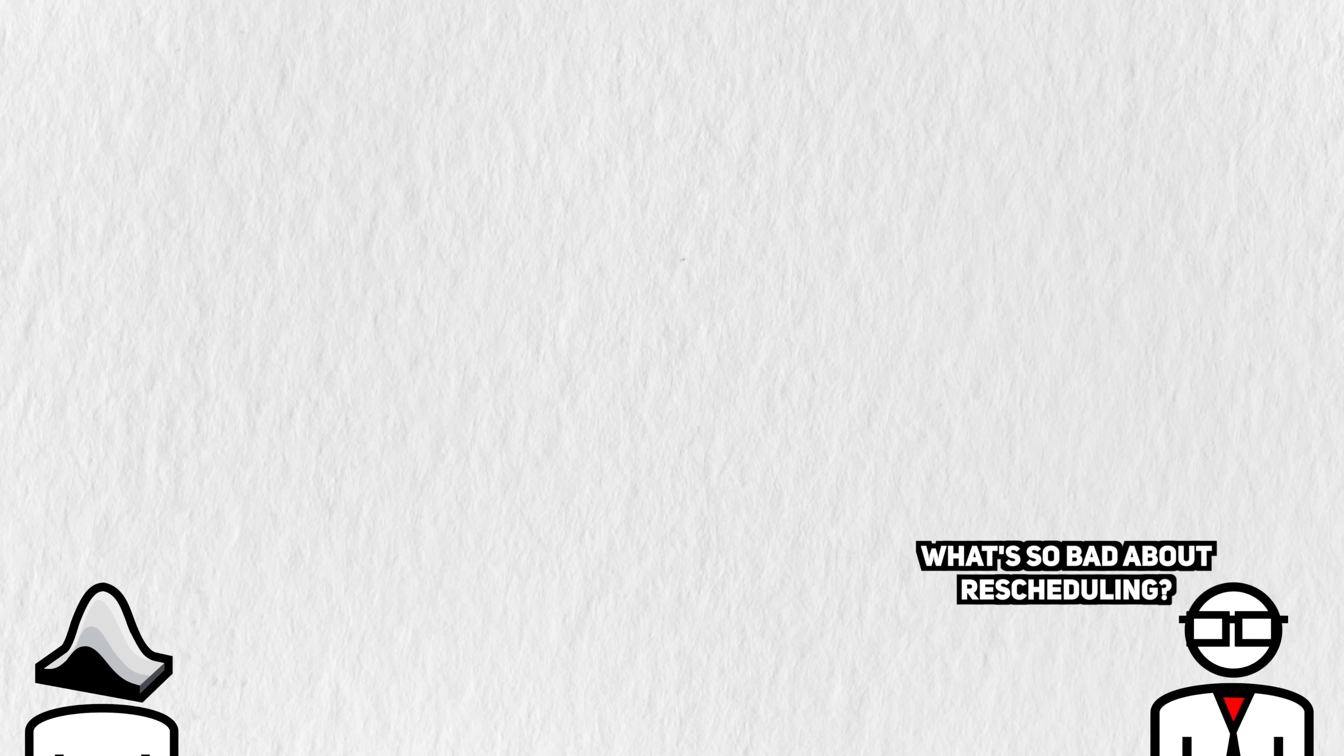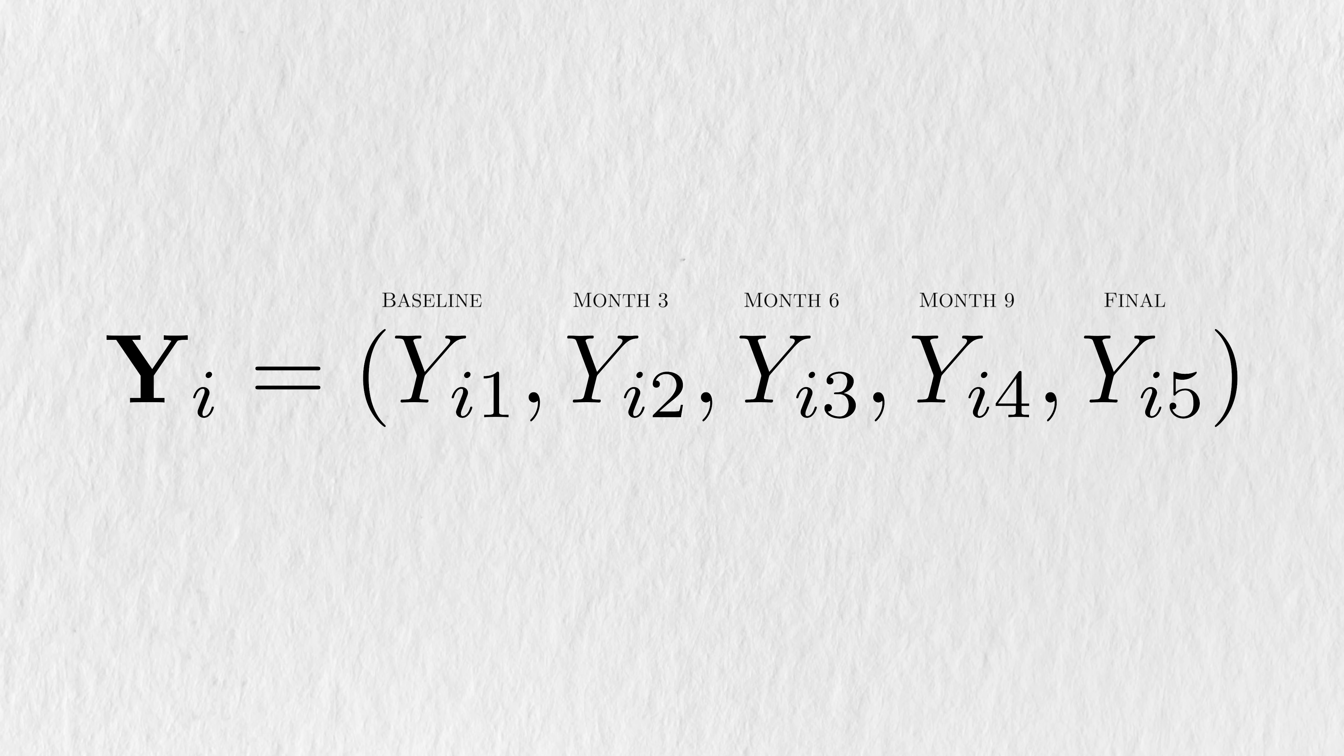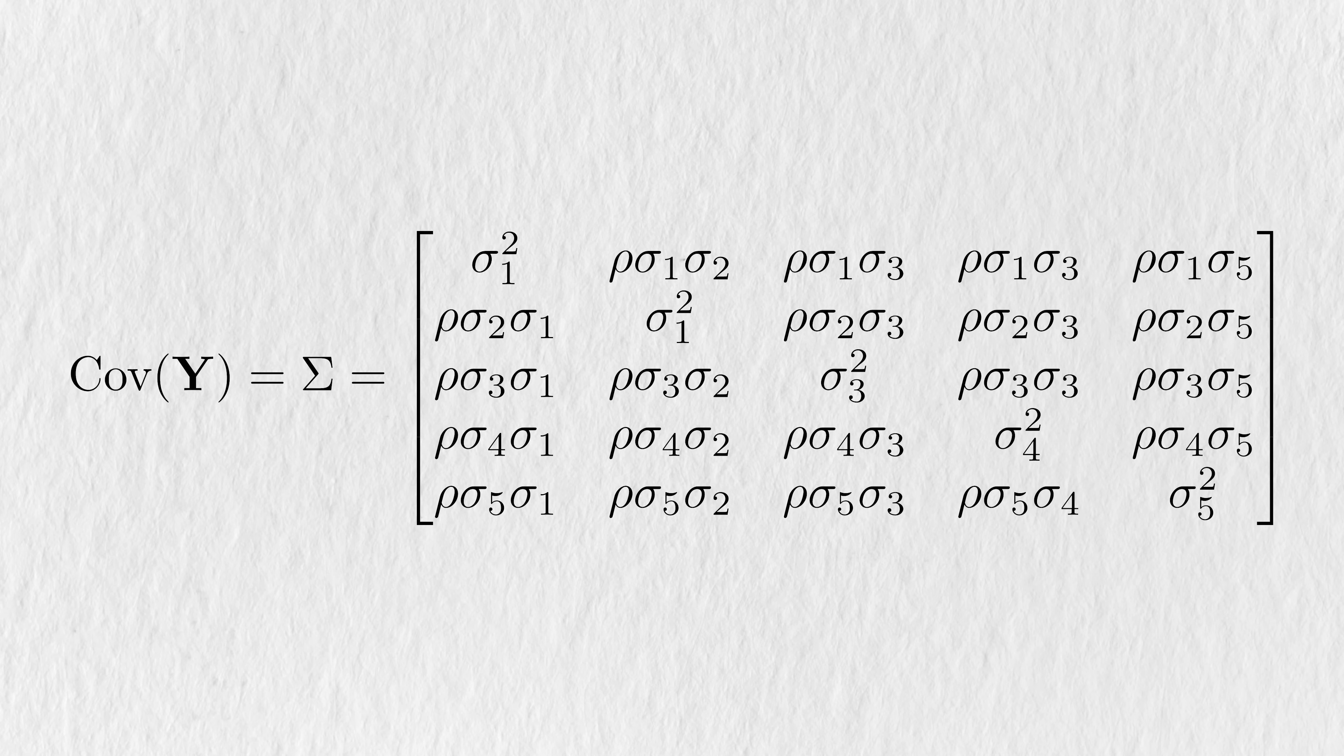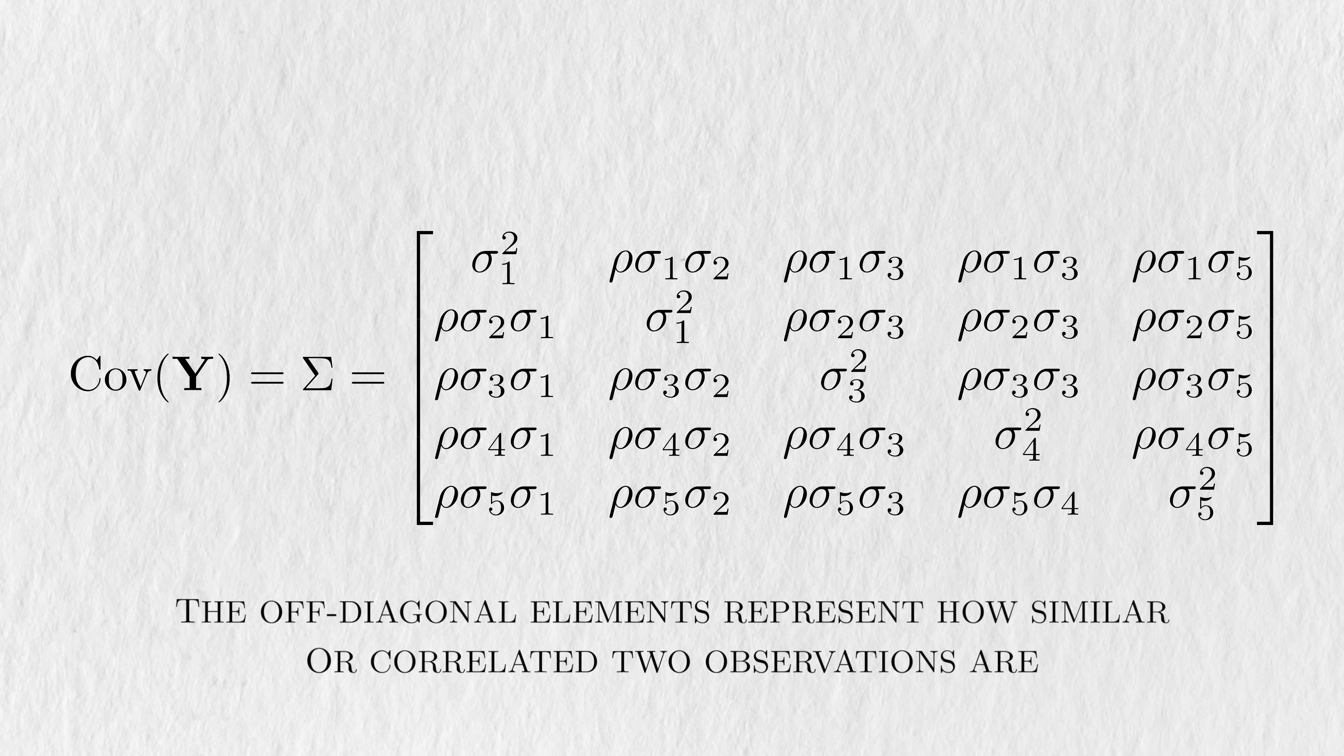You might be wondering how rescheduled appointments are even relevant to the statistics. Let's say that we're in a hypothetical world where everyone in the study keeps their appointments exactly when we schedule them. So this means five observations per person. With correlated data, we have this notion of a correlation or covariance matrix, which I'll denote as capital sigma. This matrix numerically describes how similar multiple observations from the same person are. The rows and columns correspond to the observations taken throughout the study. The off-diagonal elements represent how similar or correlated two observations from the same person are.